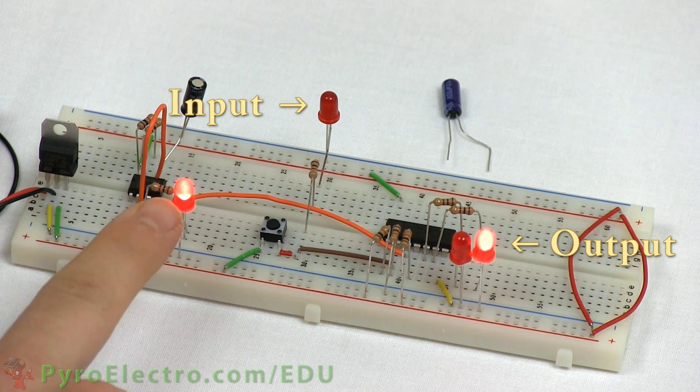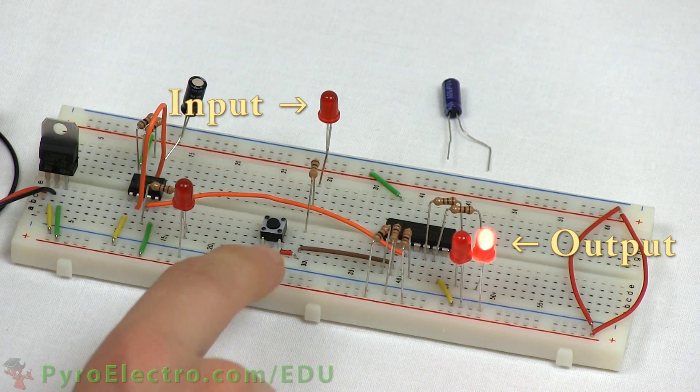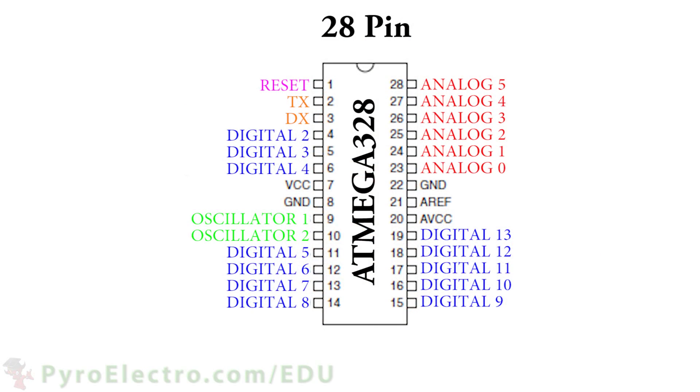A microcontroller operates in the same way when it comes to input and output, with the main difference being that the software we will write will be in charge of sensing the input and setting the output.